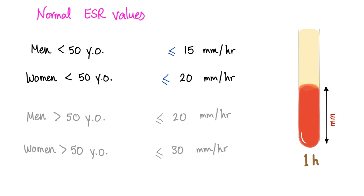Normal ESR values: if you are male and under 50 years old, it should be less than 15 mm/hr. If you are female and under 50 years old, it should be less than 20 mm/hr. As you grow older, everything gets worse — and ESR is no exception.